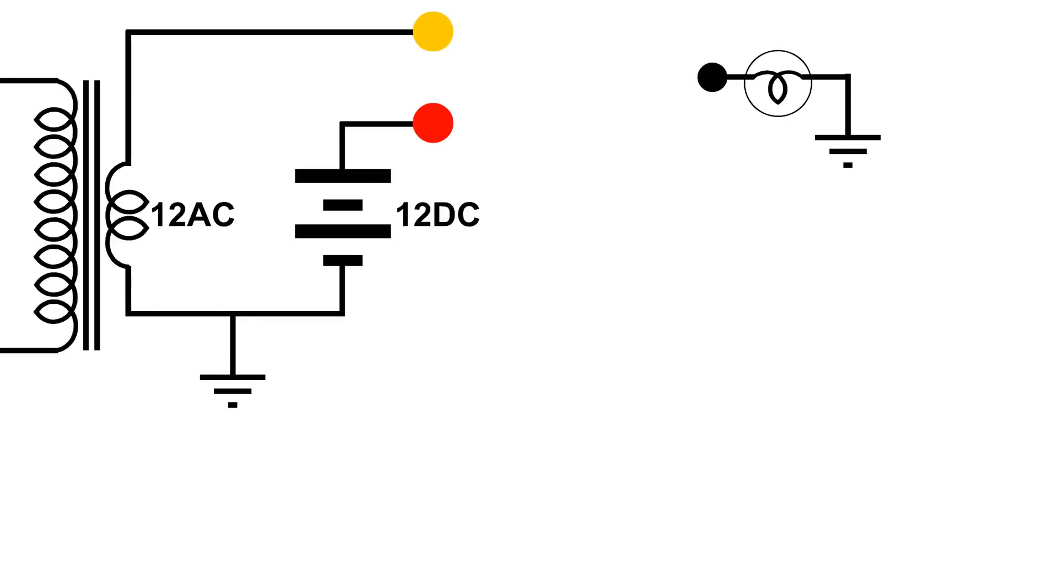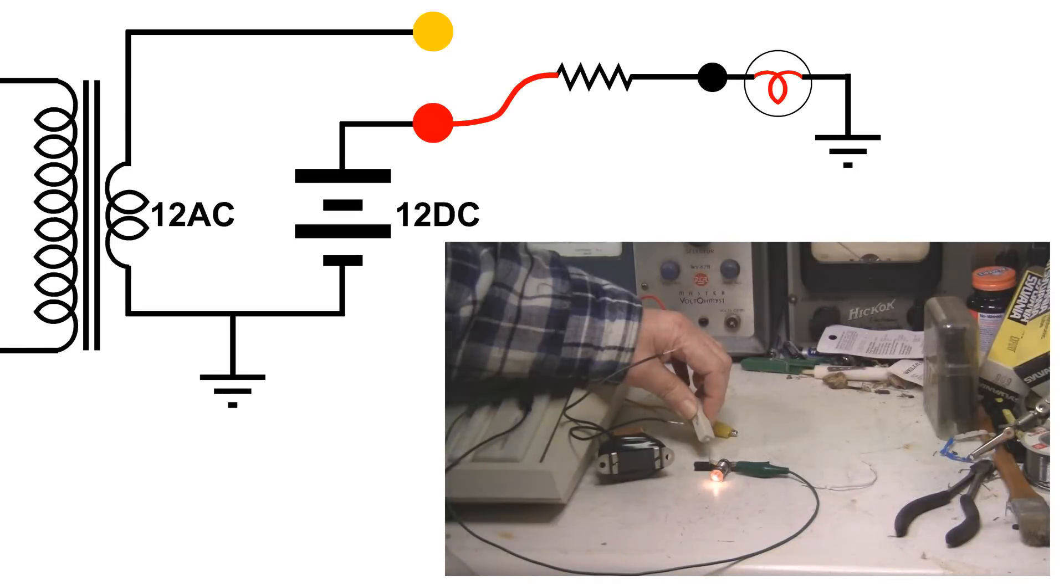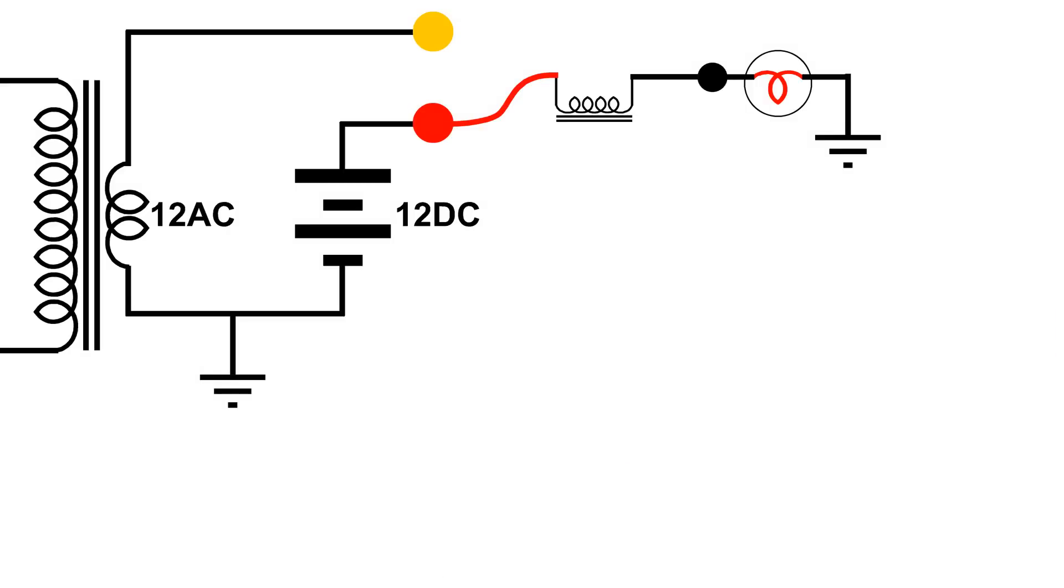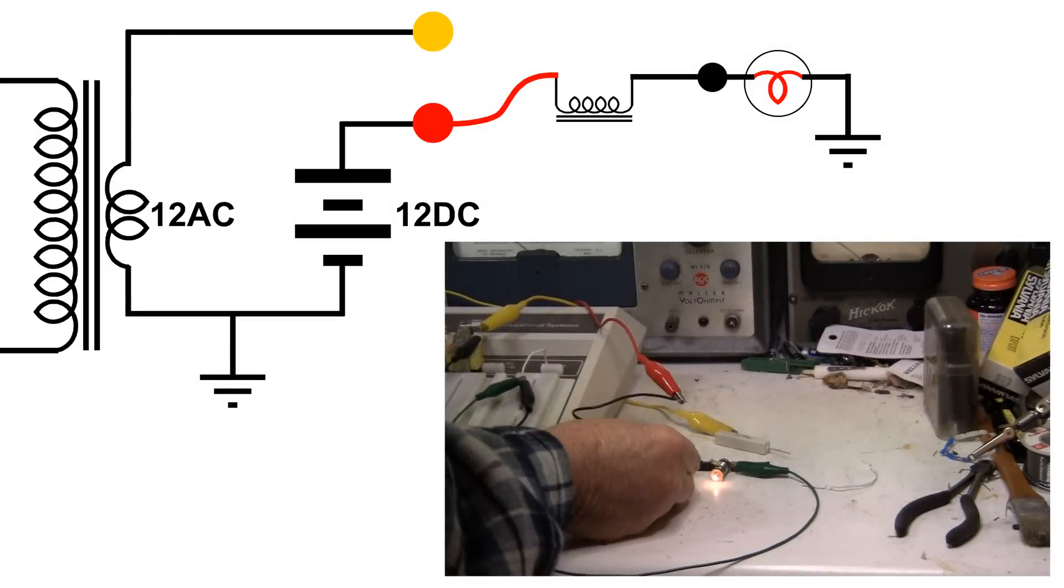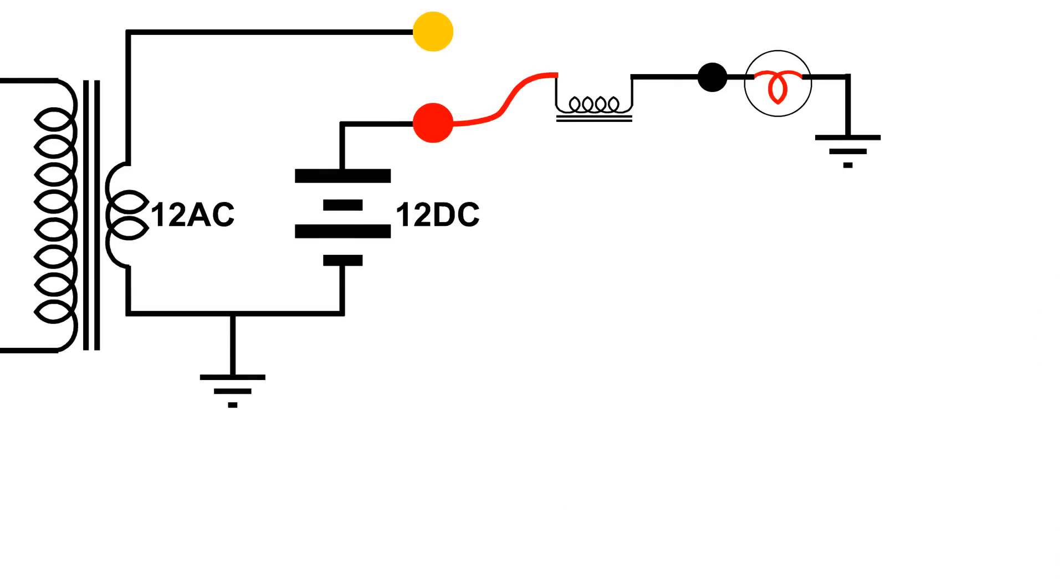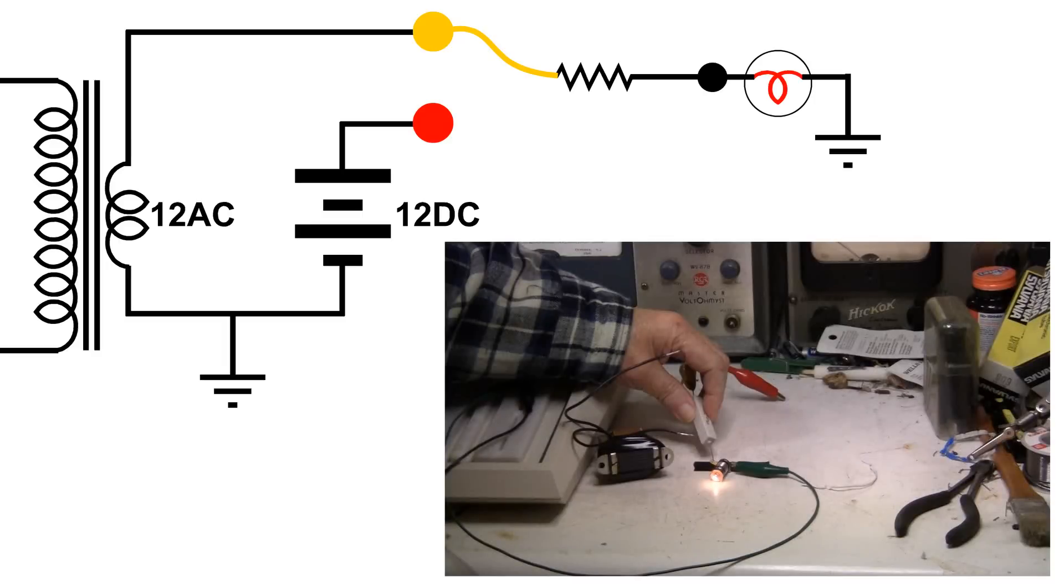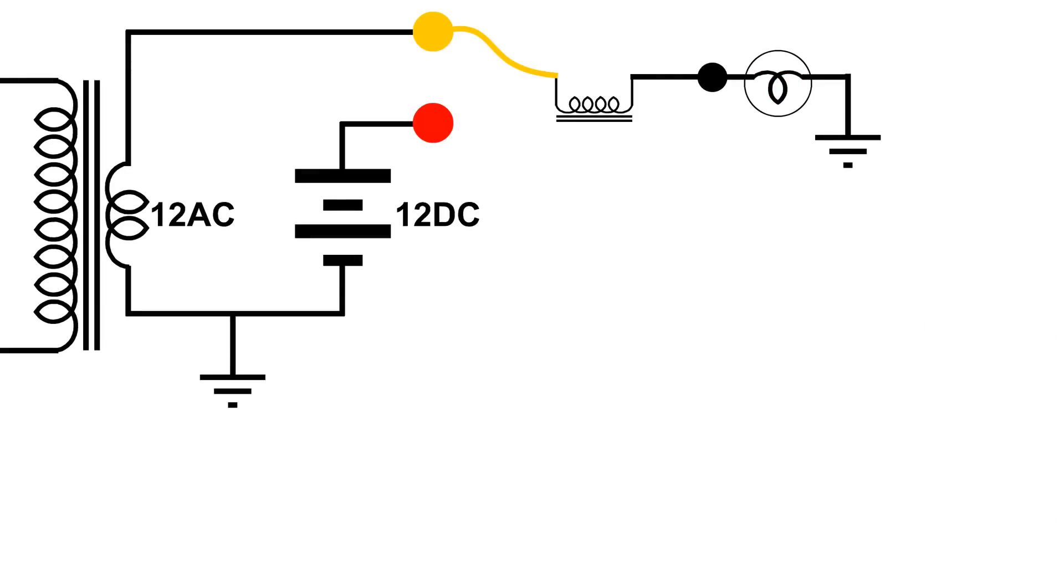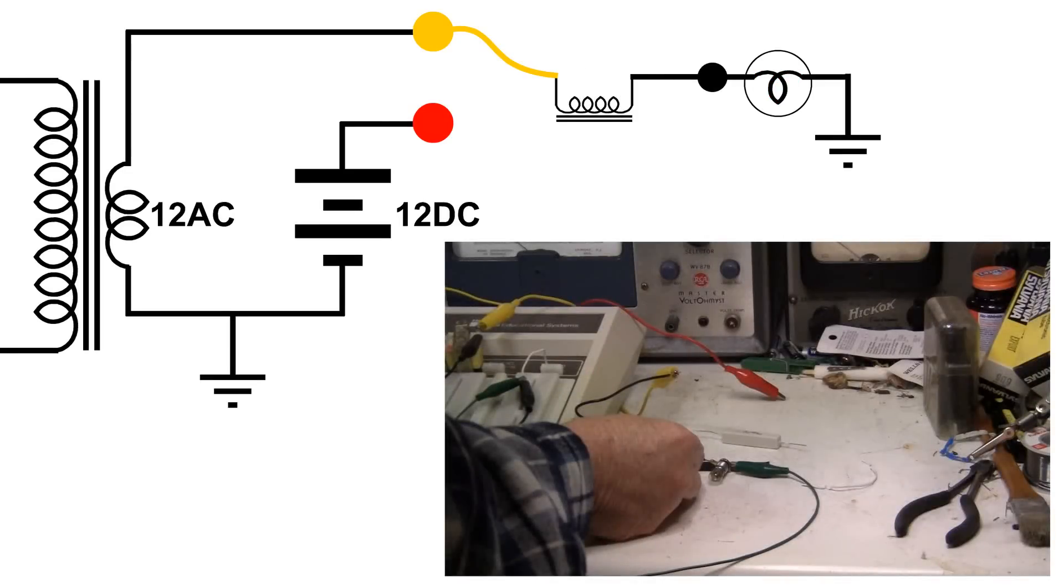So what this demonstration showed was with DC, a resistor and a coil will pass current enough to light the light bulb. But when we went to AC, the resistor still passed enough current to light the light bulb. But the coil had such a high impedance or resistance to AC, and you can see that the bulb did not light.